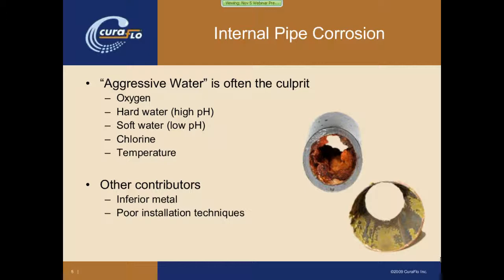Other contributors include inferior metal. Over time there have been a variety of manufacturers of copper and galvanized pipes, and depending on how thick the walls were and what types of materials they used, this has an effect on the longevity of the pipe. And then poor insulation techniques of the system also contribute.